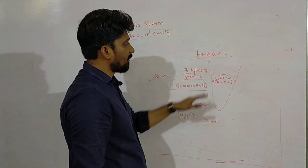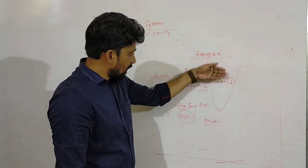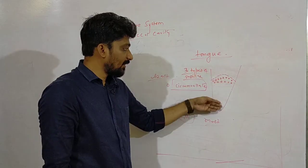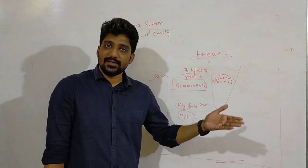Now the posterior one third of the tongue is whitish in color because there is a lack of papillae over here. In front of this, the anterior two-third we have red papillae - it is red because it is supplied by the blood.